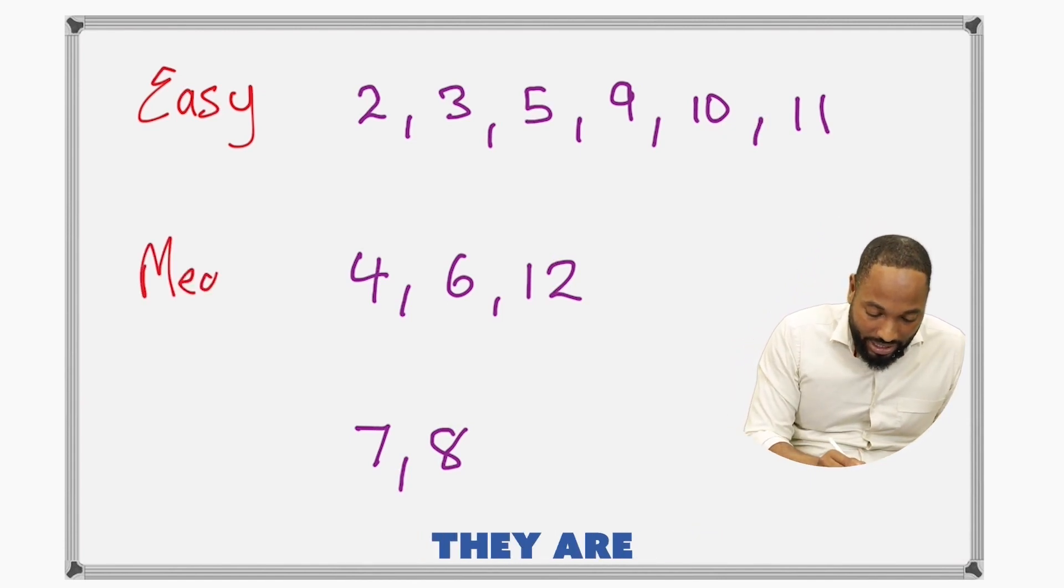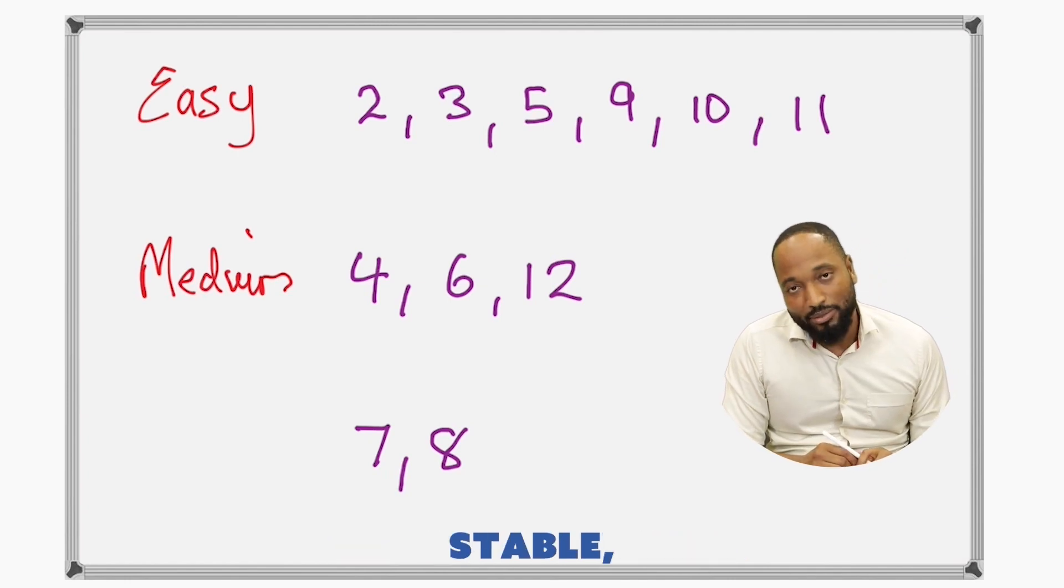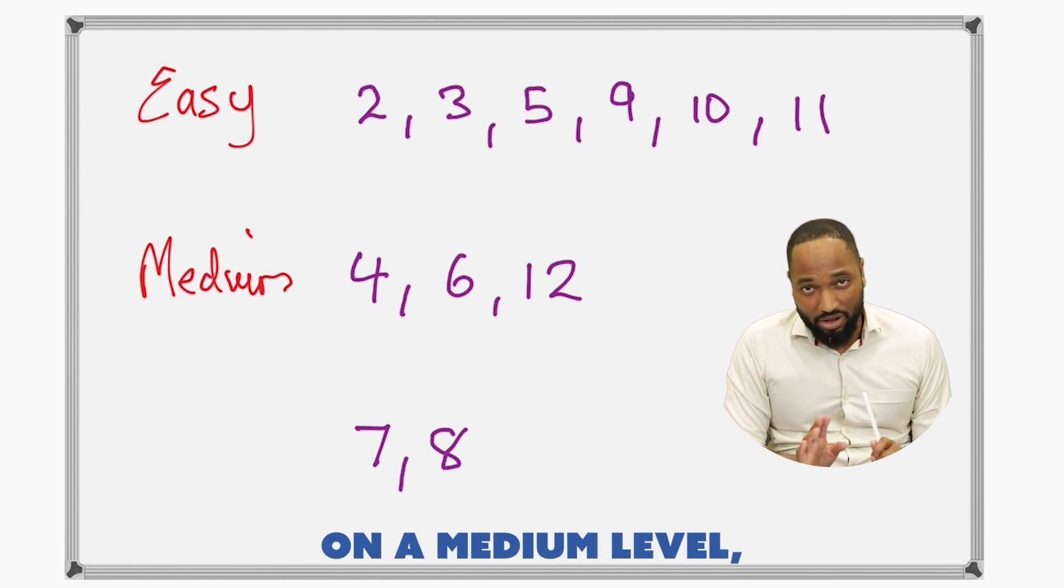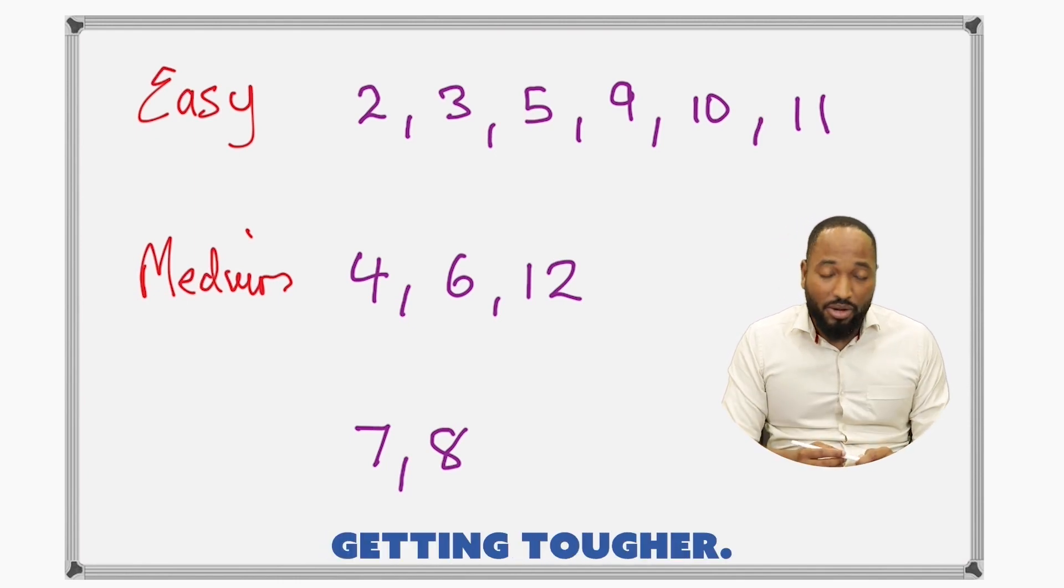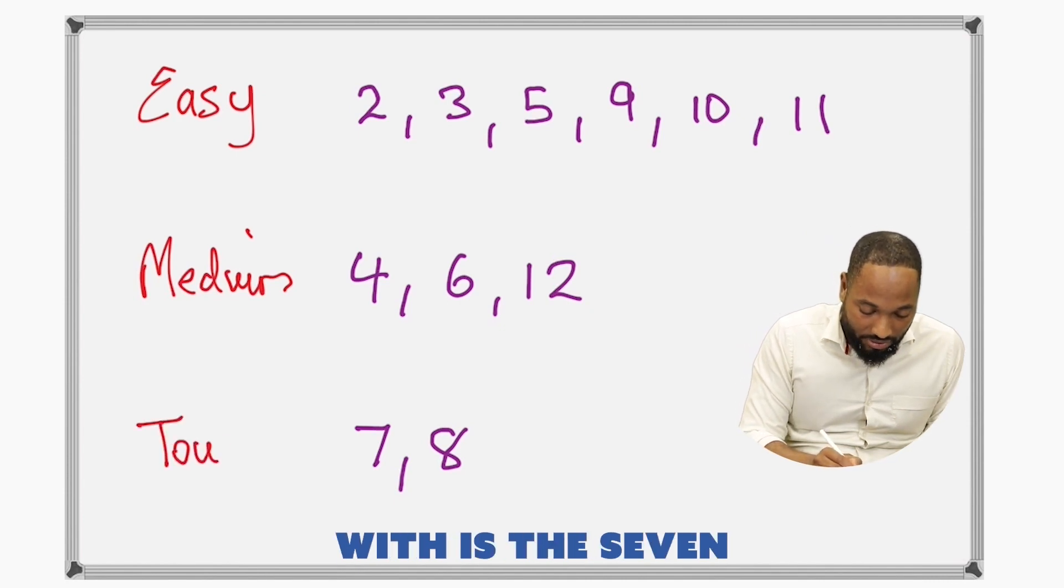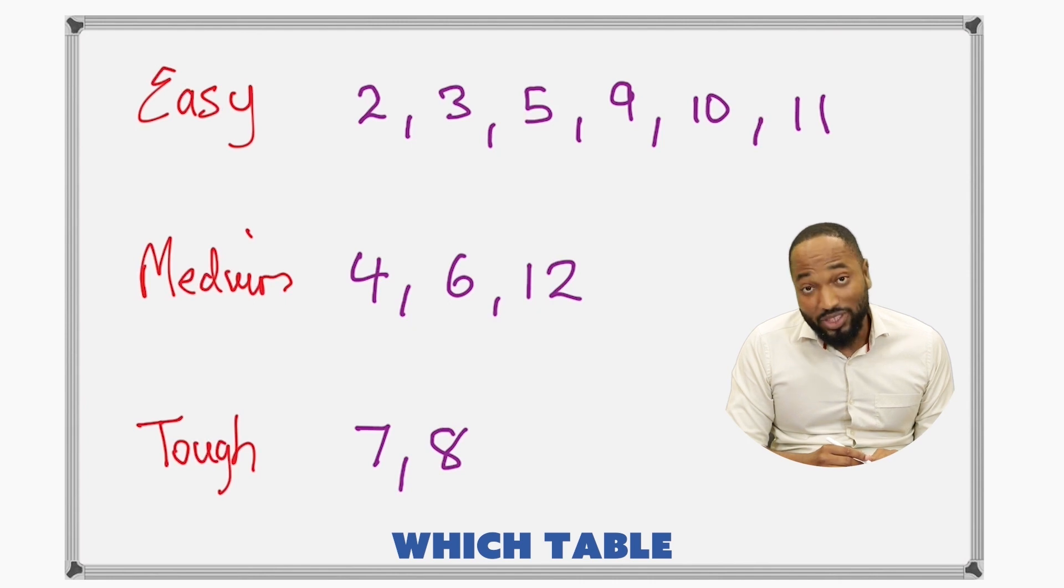Do you know the patterns? And then there's the medium guys, the medium guys like the 4 times table, the 6 times tables, the 12 times tables. Do you know these? The 12 times table most people find that on the medium level, but it's getting tougher. But the tables that most students have problems with is the 7 and the 8 times table.